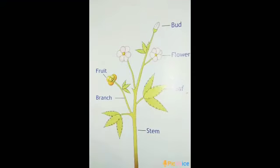The shoot is made up of the stem, branches, leaves, bud, flowers, and fruit. Each part of a plant has its own jobs.